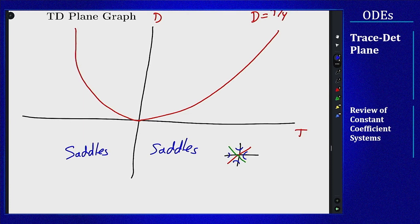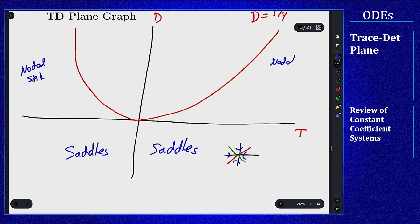Now above the t-axis we have two options, the left side or the right side. On the left side we have trace negative. If the trace is negative that means I have a nodal sink. So over here we have nodal sink, and over here we have nodal sources.